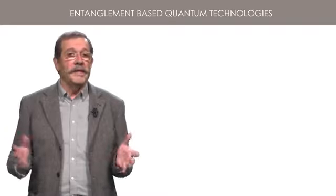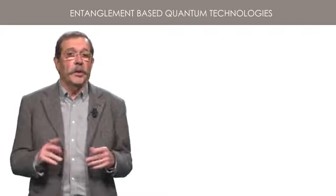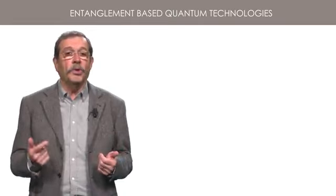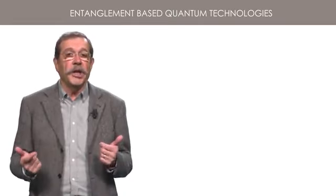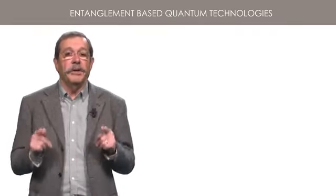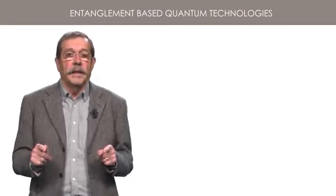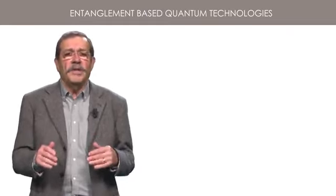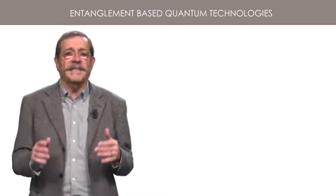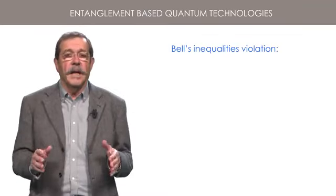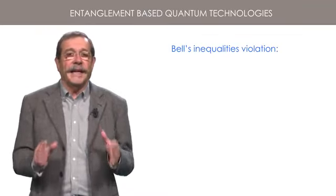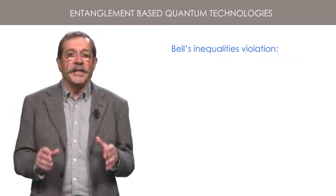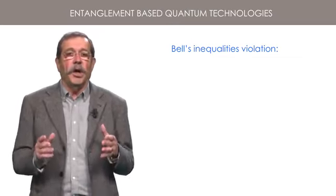Welcome to this new lesson of our second quantum optics course. In the previous lesson, you have learned what was the debate between Einstein and Bohr about the interpretation of quantum mechanics. The debate has been settled by a long series of experimental tests of Bell's inequalities, and the conclusion is clear: one must renounce Einstein's local realist vision of the world.